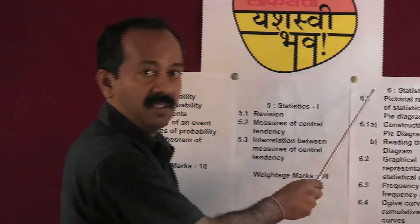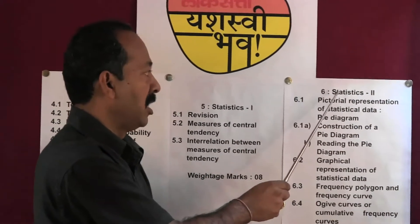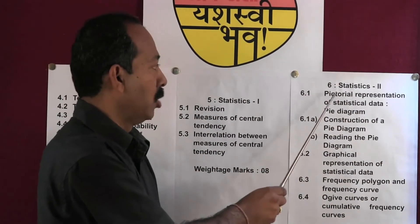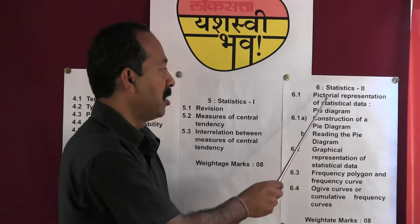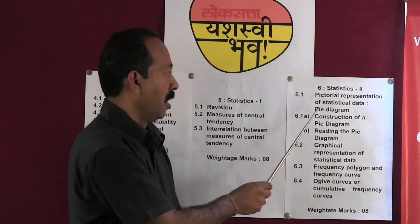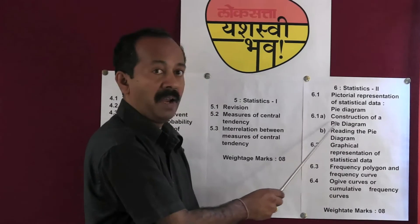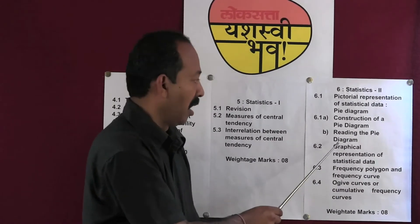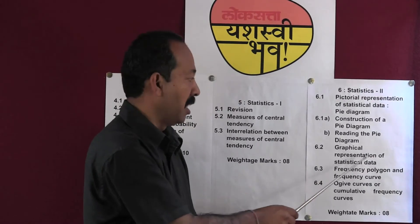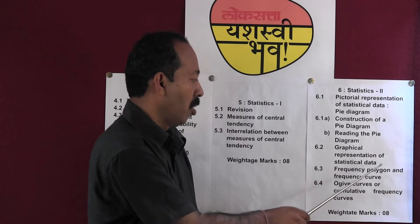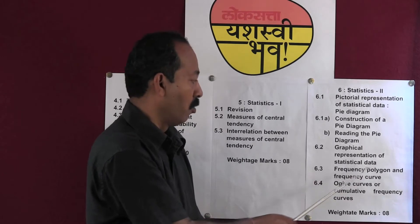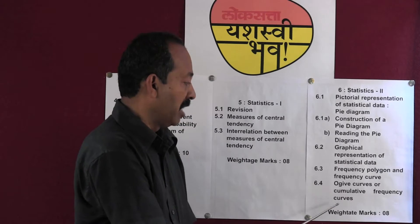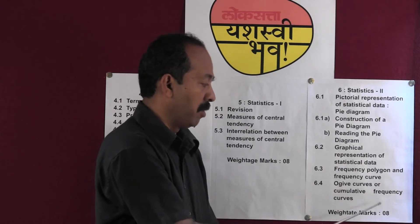Chapter 6: the name of the chapter is Statistics Part 2. The important contents are: Pictorial representation of statistical data, Pie diagram, Construction of a pie diagram, Reading the pie diagram, Graphical representation of statistical data, Frequency polygon and frequency curve, and Ogive curves or cumulative frequency curves. The weightage of marks for this chapter is 8.